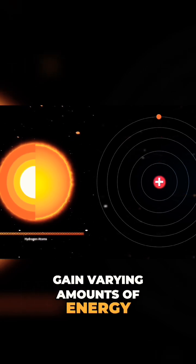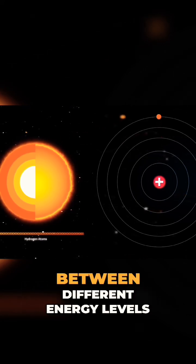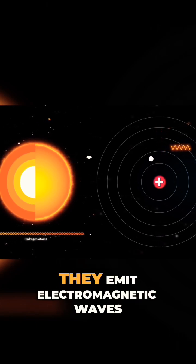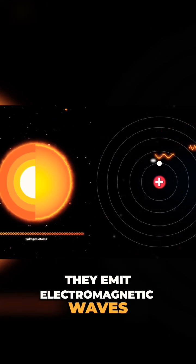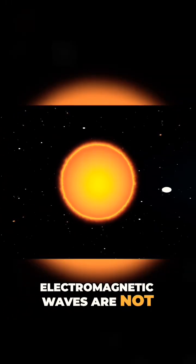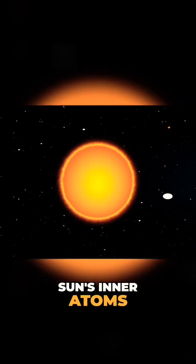and gain varying amounts of energy, causing electrons to jump between different energy levels. Depending on the distance of their jumps, they emit electromagnetic waves of different wavelengths. Electromagnetic waves are not only emitted by the sun's inner atoms.